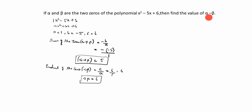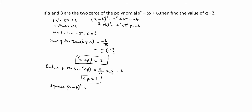The given question asks for alpha minus beta, but we only have alpha plus beta and alpha beta. So what do we do in this case? We have to square alpha minus beta. The square of (a minus b) expands as a squared plus b squared minus 2ab. And (a plus b) squared is a squared plus b squared plus 2ab. This is the formula we need to apply.